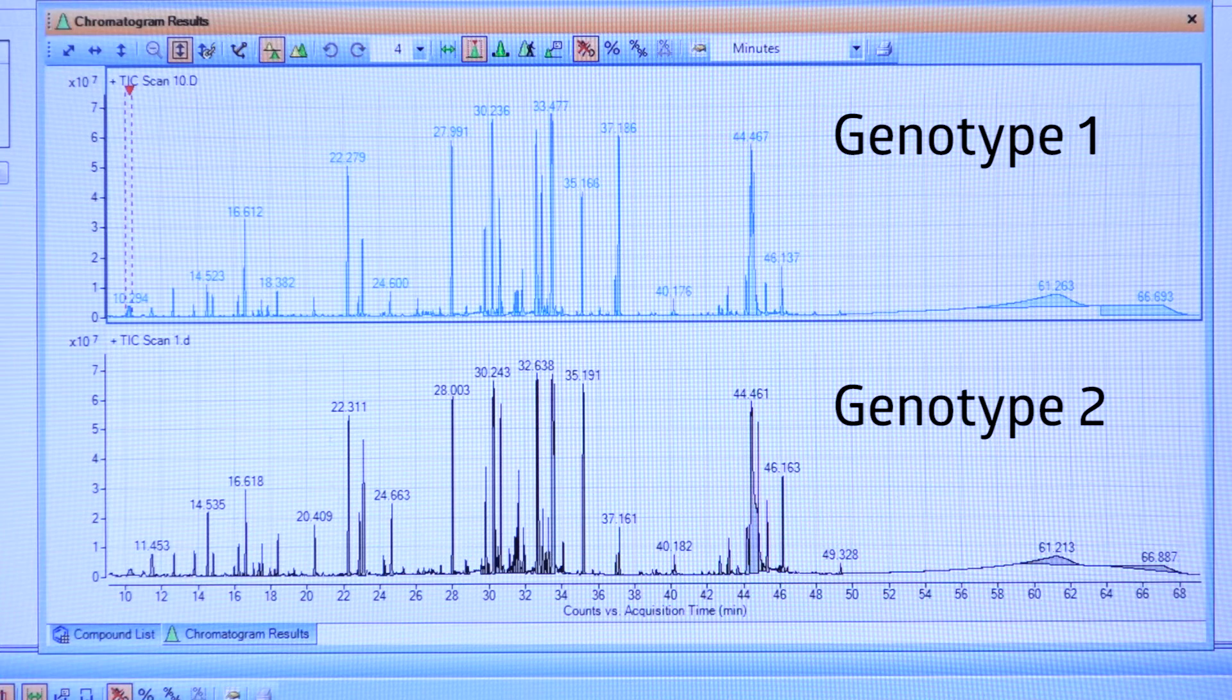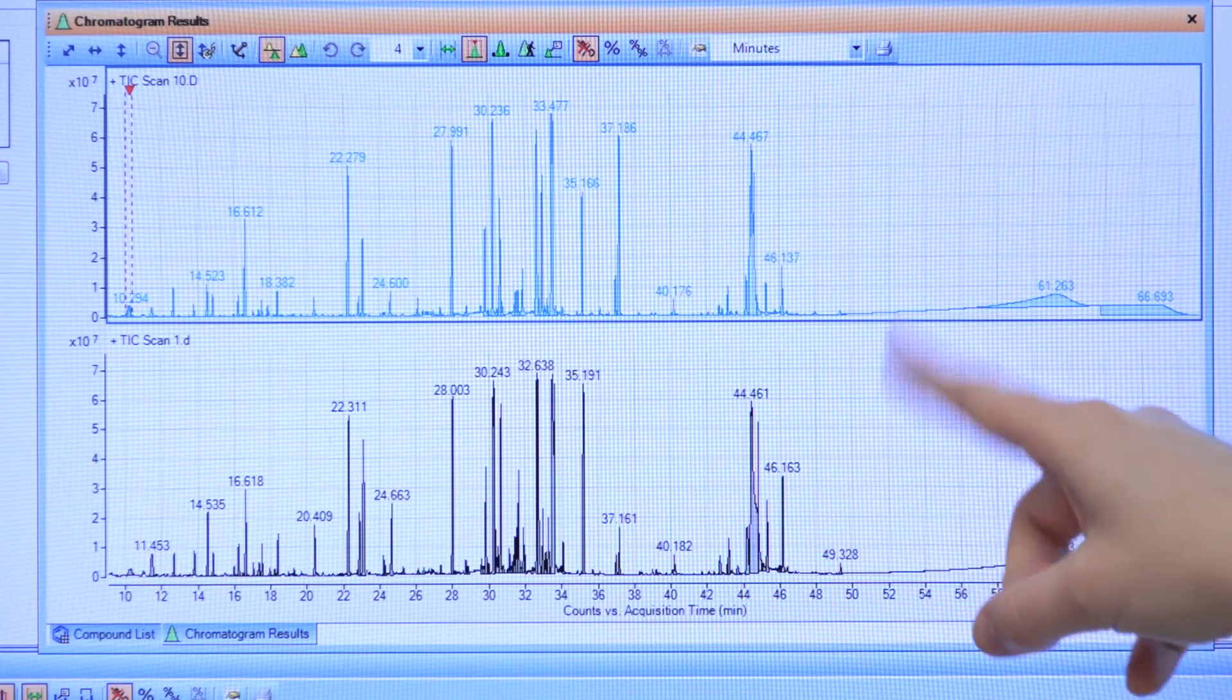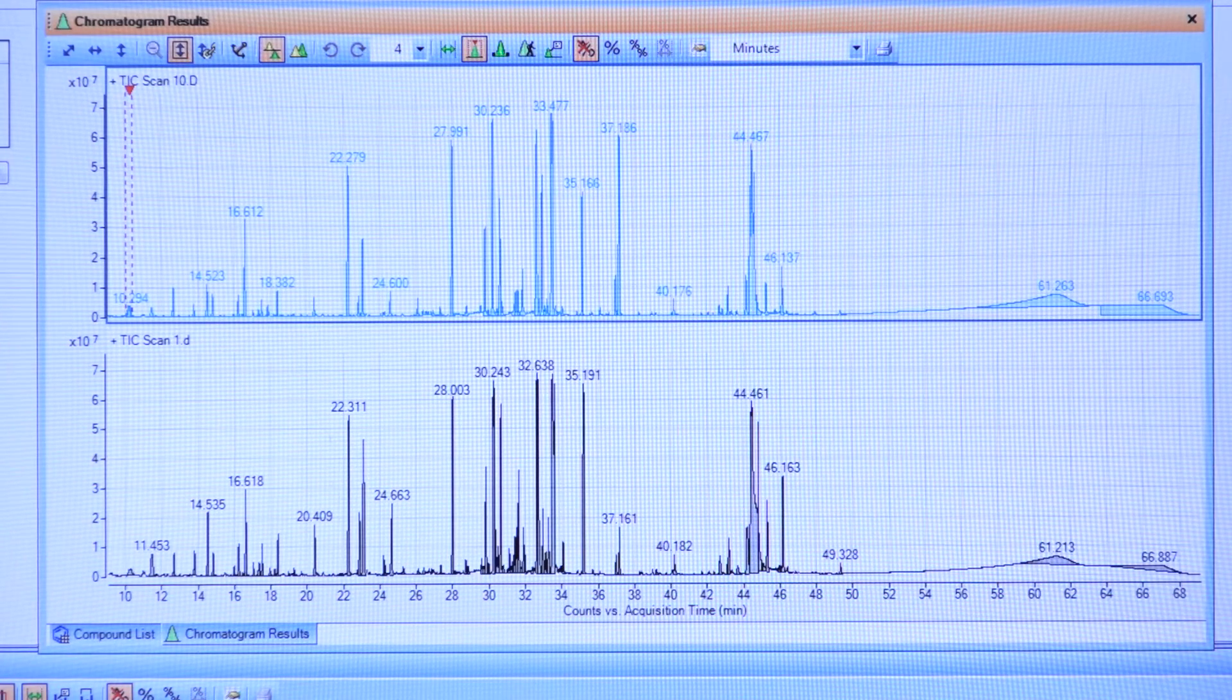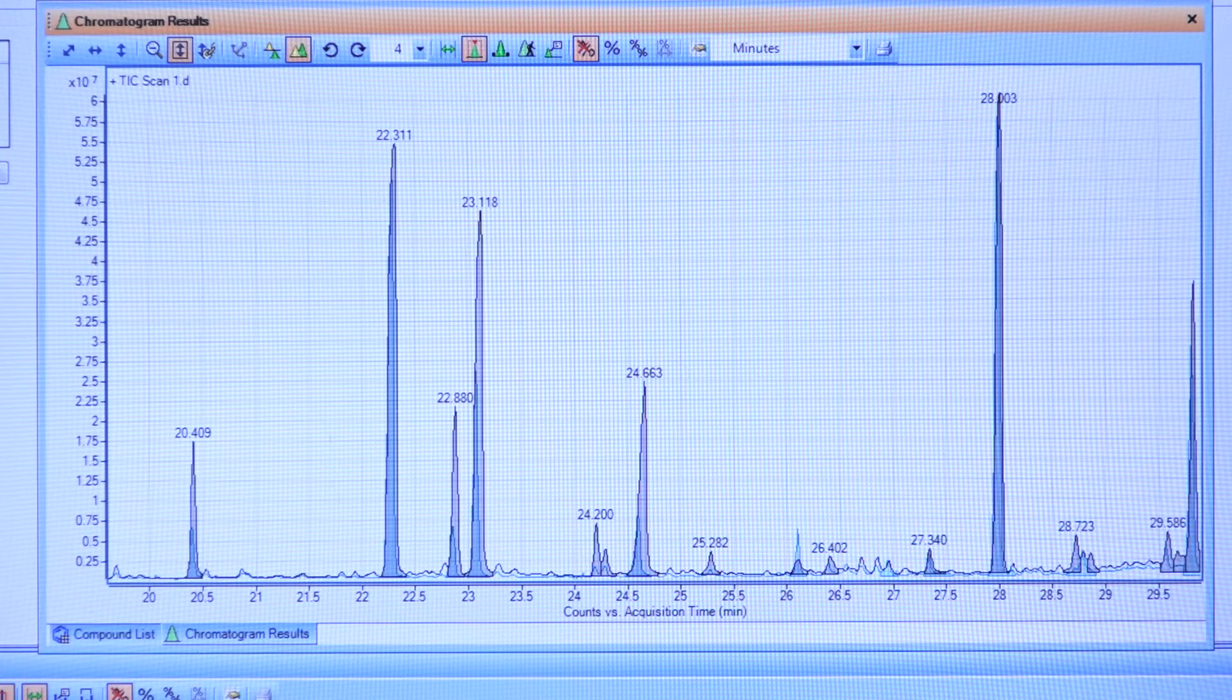And so these are the results from two different genotypes. And if we just look at the big picture, we can see that they have very similar metabolite profiles. But if we were to overlay these chromatograms and zoom in, what we can see is that there are some distinct differences in the amount of metabolites that are in the two different genotypes.